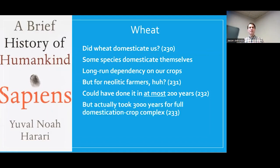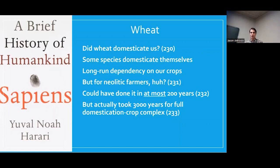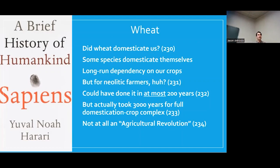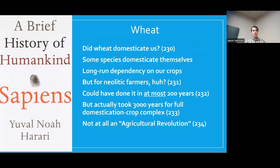However, the actual process took about 3,000 years between first manipulating these plants and achieving the full-on domesticated farm-field relationship we know today. To call this 3,000-year process of stops and starts an 'agricultural revolution' is misleading — a revolution should not take 3,000 years. People were certainly capable of speeding this up, but they didn't really want to do it. It turns out they may honestly have not wanted to do it at all.